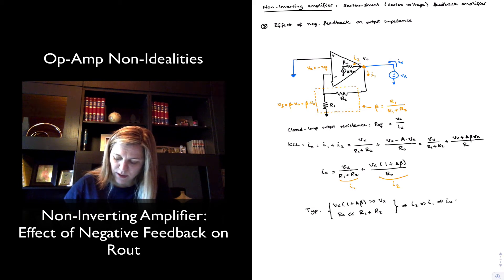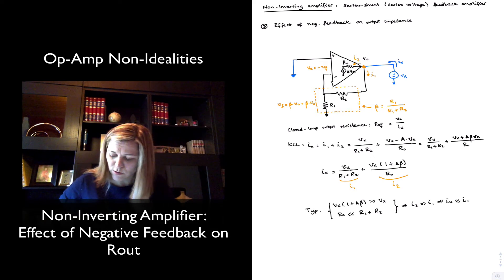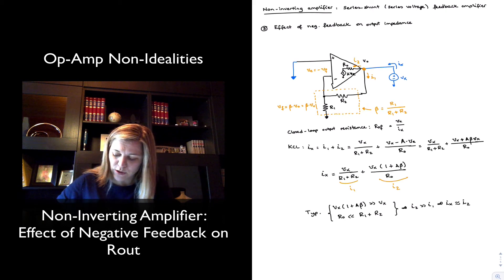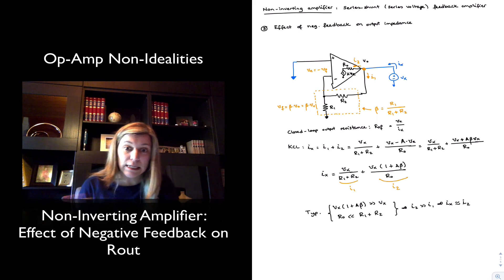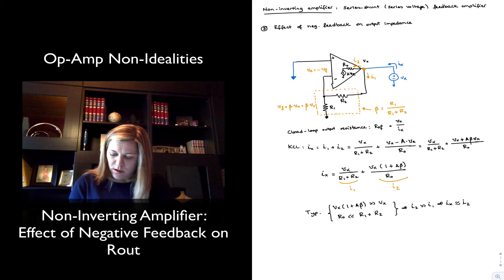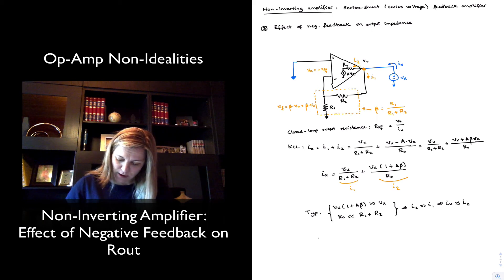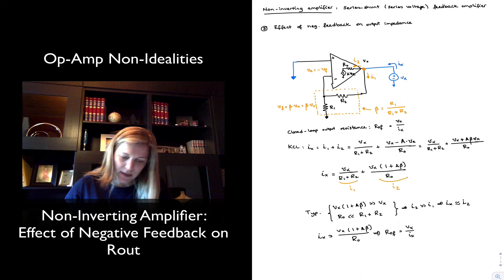And so I can typically approximate Ix to be equal to I2, which is that most of the current is going to go into the op-amp. And so if I make that approximation, now I have Ix being approximately equal to Vx times 1 plus A times beta divided by RO. And my ROF, which is equal to Vx divided by Ix, is then approximately equal to RO divided by 1 plus A times beta.